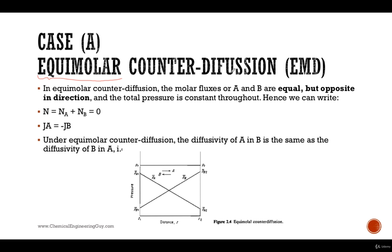So equimolar counter-diffusion implies that we have the same amount of moles going in different directions. So we got A going to the right and B going to the left. An example could be you got a tank of A which is a gas, you got a tank of B which is another gas, you have this piping system and you have this valve.